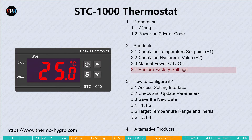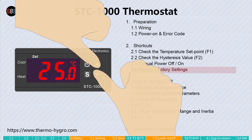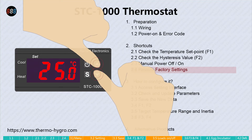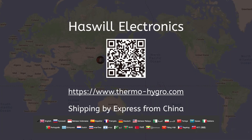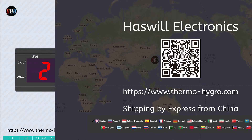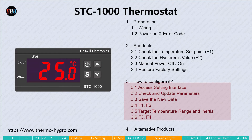To restore the factory settings, press and hold the up and down keys simultaneously for five seconds. You will see 'YE' on the screen, and then it shows the room temperature in two seconds. Above is the basic operation method. Next, let's learn how to configure the STC-1000 thermostat.